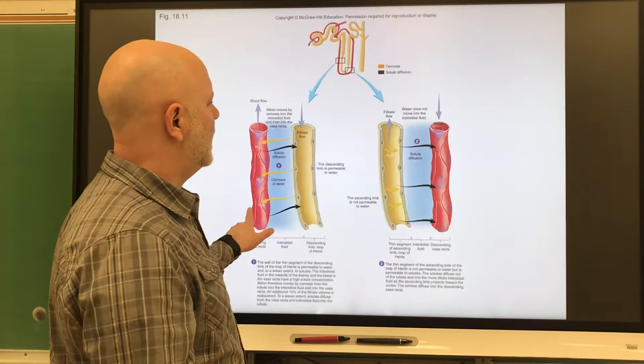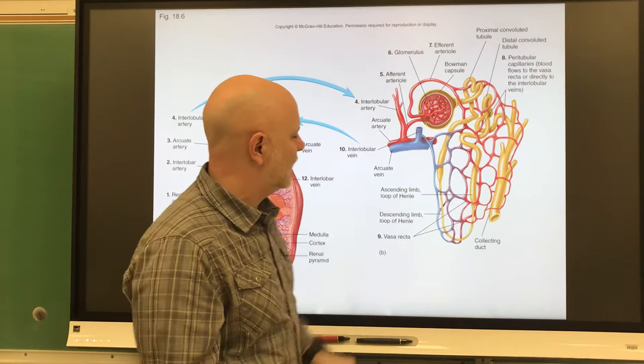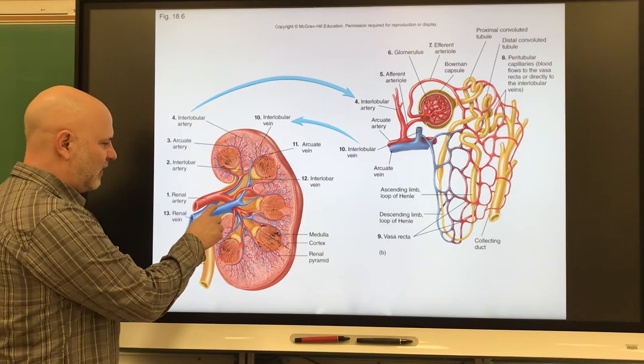All right, let's take a look at the elimination of urine. So once again, we make urine in the nephron and then that urine goes to the collecting duct. And then the collecting duct moves into a calyx, which moves into the renal pelvis, which then goes into the ureter.